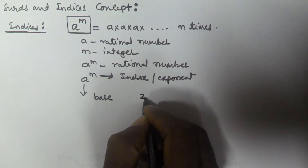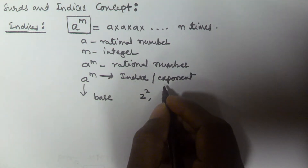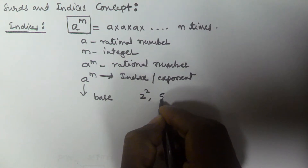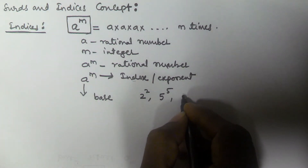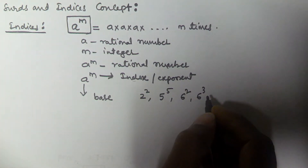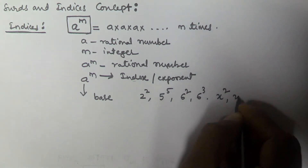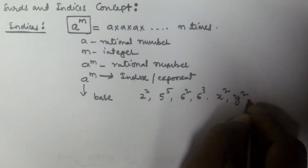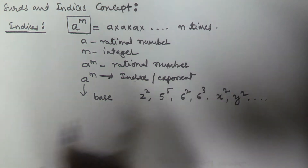For example, two to the power of two is an example of indices, like five to the power of five. Six squared or six cubed — these are all examples of indices. Similarly, x squared or y squared are also examples of indices.